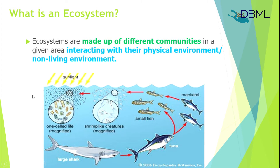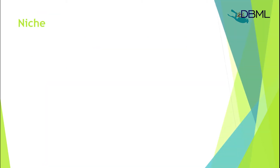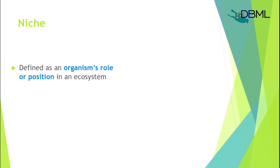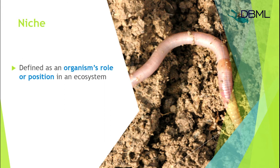Now, niche. A niche is simply an organism's role or position in the environment. A perfect example is an earthworm, which burrows through the soil helping to aerate it, allows nutrients to pass through easily, and fertilizes the ground. Earthworms live in that particular part of the soil and help make it more fertile for other organisms — that is their niche.